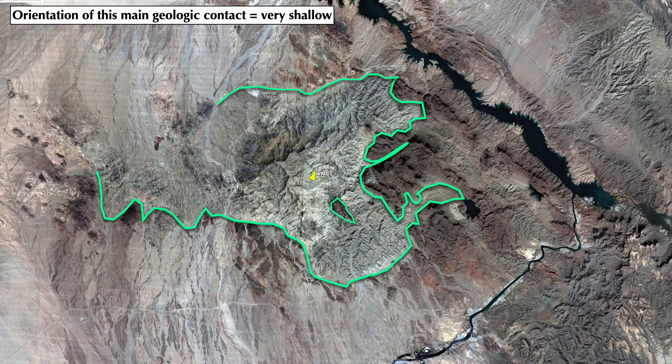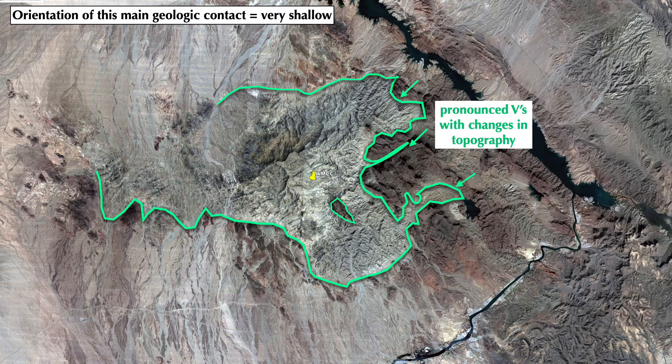I also asked you to think about the orientation, especially the dip, of this contact. Hopefully in the 3D Google Earth imagery you were able to see that the contact is quite low-angle or shallowly dipping and definitely not steep. There's a clear hint at the shallow angle of the contact just in how it produces very pronounced Vs with changes in topography, especially on the east side of the range.